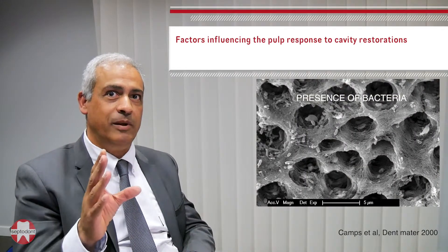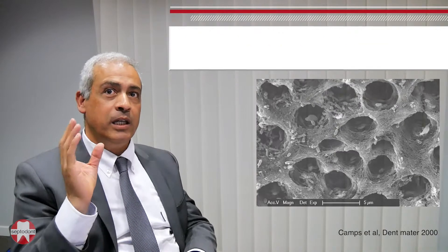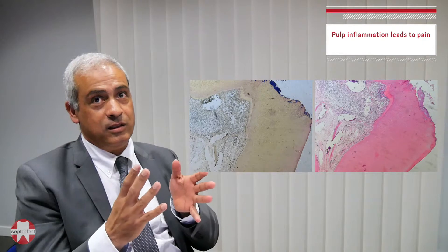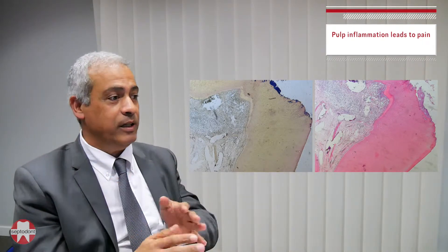If you do not eliminate bacteria, you will get inflammation, and with inflammation you will get pain — this is why the patient will come to complain in your practice. The choice of material is very important because the material should not allow the penetration of bacteria into the pulp, otherwise you will get inflammation and no regeneration.